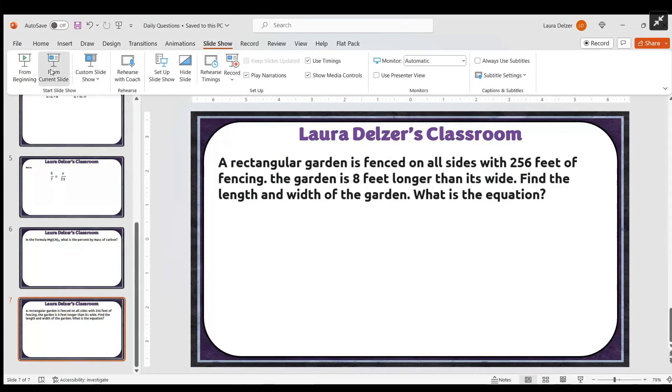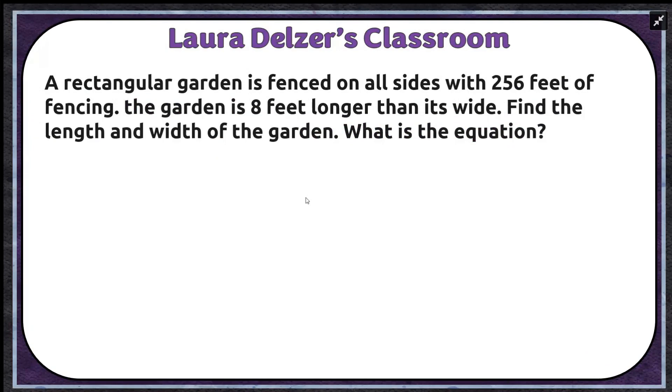Hi guys, and welcome to my classroom. So we have this question here. A rectangular garden is fenced on all sides with 256 feet of fencing. Let's go in and start underlining some important things. We got 256 feet of fencing, so we're going to do something with that. The garden is 8 feet longer than it is wide. Find the length and width of the garden. And then what is the equation?